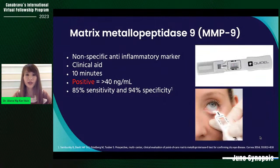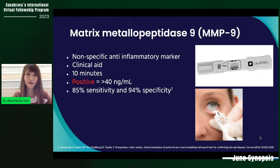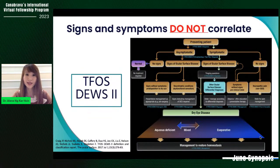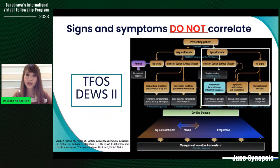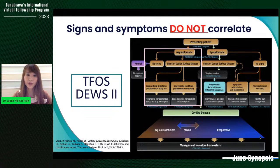The ASCRS Corneal Clinical Committee devised a pre-surgical algorithm for diagnosing ocular surface disease before refractive surgery, including a new pre-operative screening questionnaire called SPEED2. It is simple and can be easily incorporated into practice workflow. Accurate biometric and keratometric assessments with repeated tests are essential. In a study by Liu et al., an irregular topographic pattern was observed in 45% of dry eyes, which decreased to about 31% after installation of artificial tears.